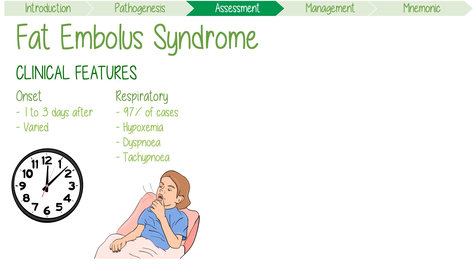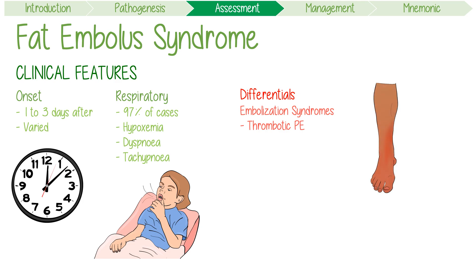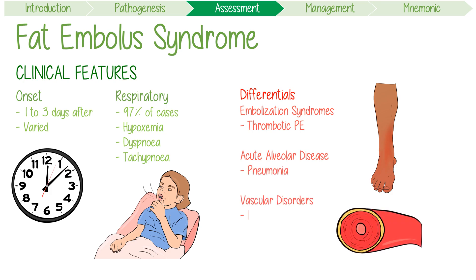However, all of these features of pulmonary distress are non-specific. Therefore, you should consider differentials like other embolization syndromes such as a thrombotic pulmonary embolism coming from a DVT, acute alveolar disease due to heart failure or pneumonia, and vascular disorders like lupus.